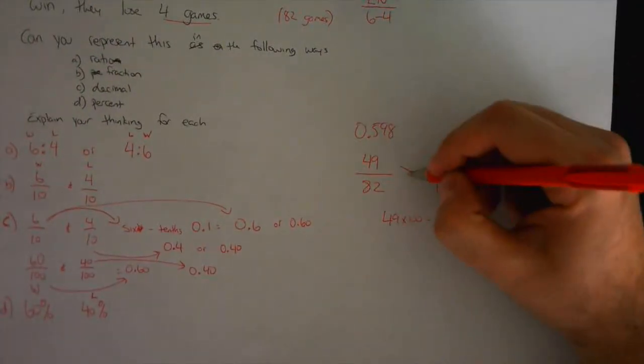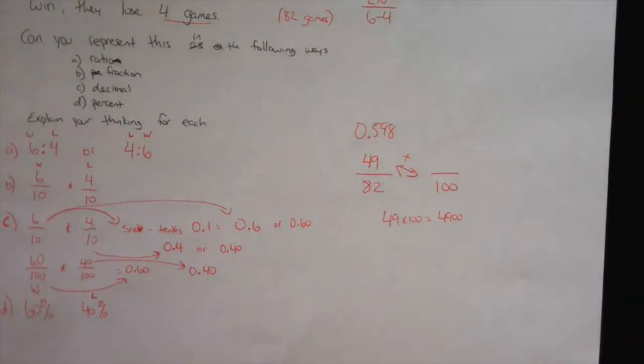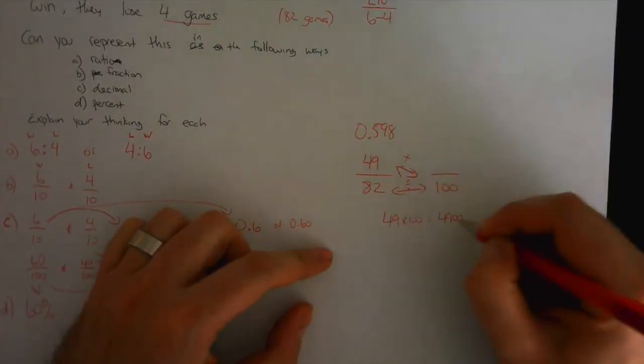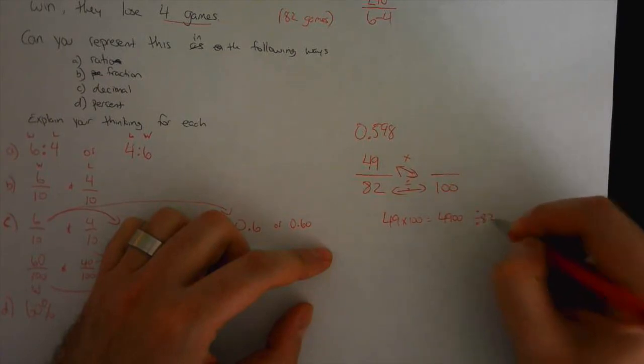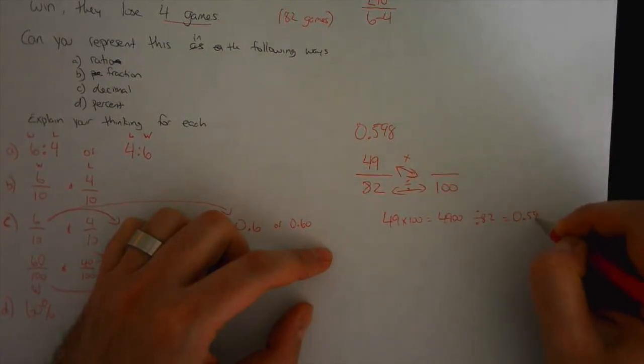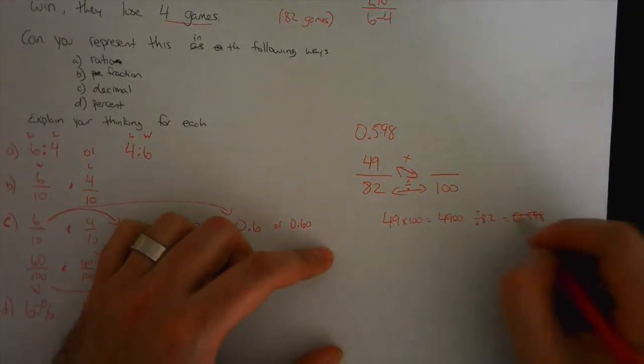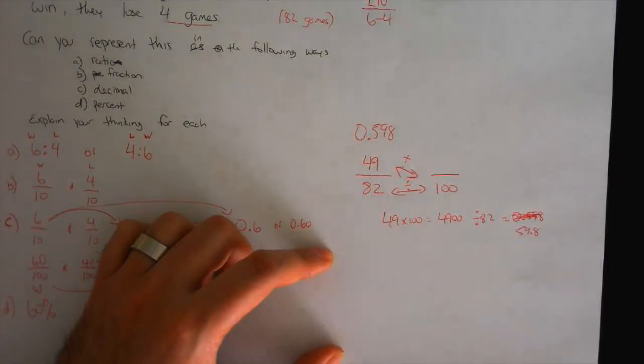Who remembers what this method is called? This is called cross multiply. So if you go forty-nine times a hundred—forty-nine hundred—four thousand nine hundred. And now what do I do? What's the last thing I do? You divide by eighty-two. Your answer is zero point five nine eight. Oh sorry, fifty-nine point eight is your answer.